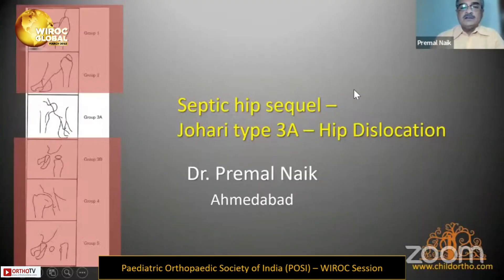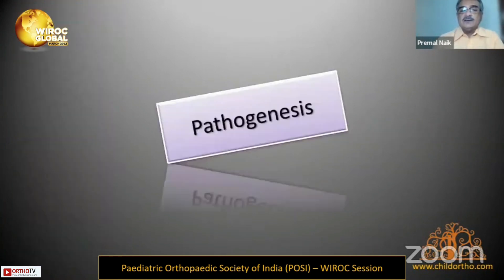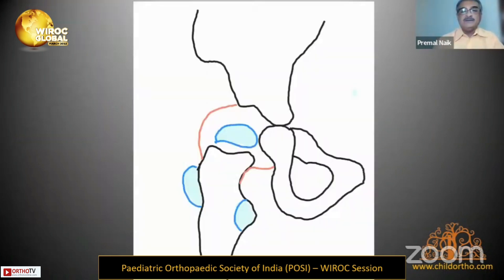I'll move to the third A-type where there's a dislocation with the presence of the femoral head. As my last talk, I'll briefly go through how this happens.